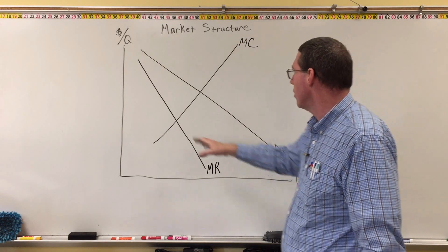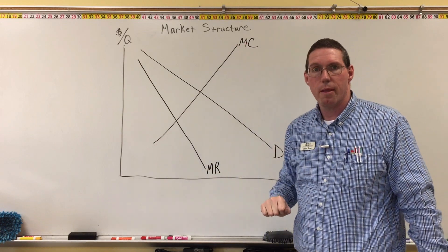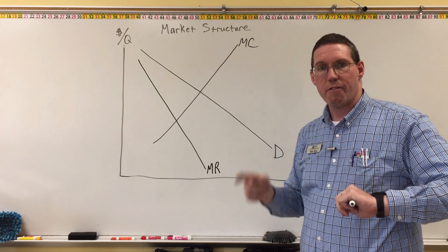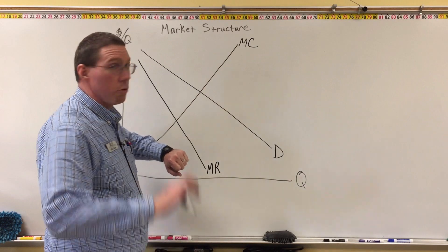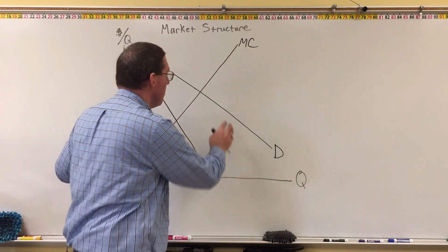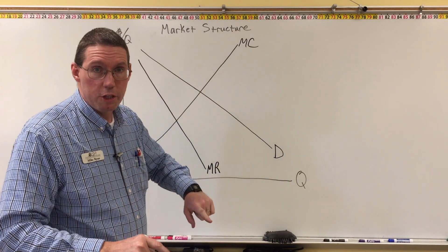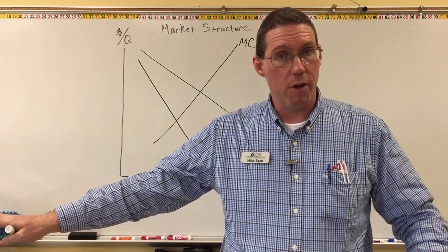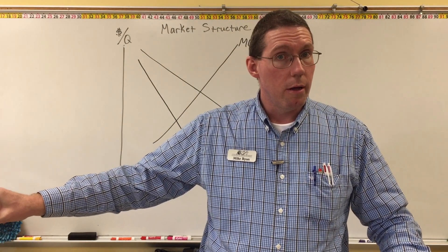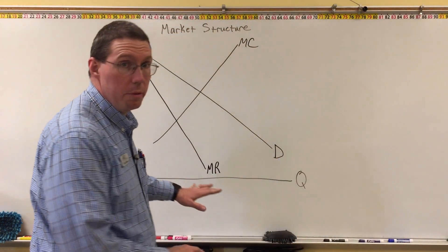So we've got the demand curve downward sloping, underneath it the marginal revenue curve downward sloping, and the marginal cost curve as the only upward sloping curve so far. The price and revenue curves are related to each other, and all three cost curves are related to each other, but they are independent of each other in terms of where they are on the coordinate plane.